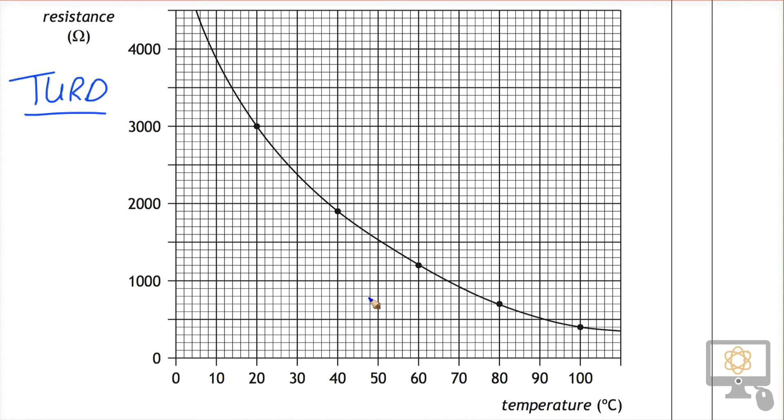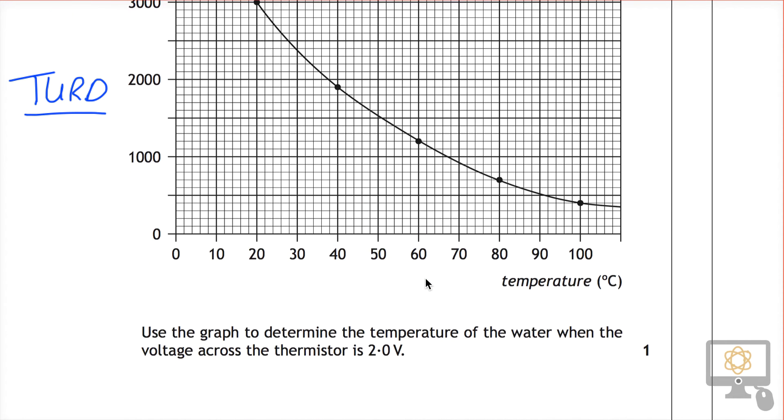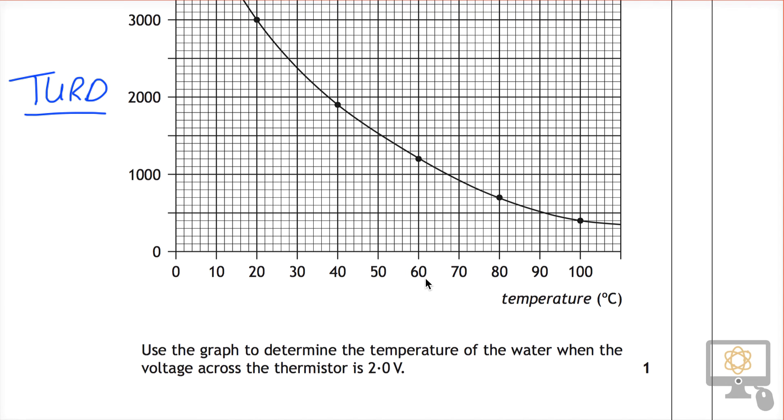So our understanding is aligning with the question. Let's now have a look at the question itself. It says, use the graph to determine the temperature of the water when the voltage across the thermistor is 2 volts.